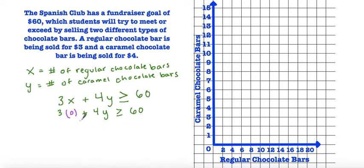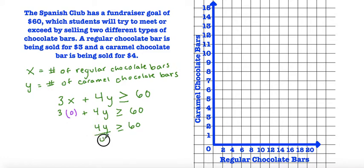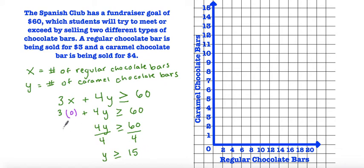So 3 times 0 is just 0, and we end up with 4y is greater than or equal to 60. In order to get y by itself, we divide both sides by 4, giving us y is greater than or equal to 15. So that's our y-intercept: x is 0 and y is 15, and I'm going to plot that point.